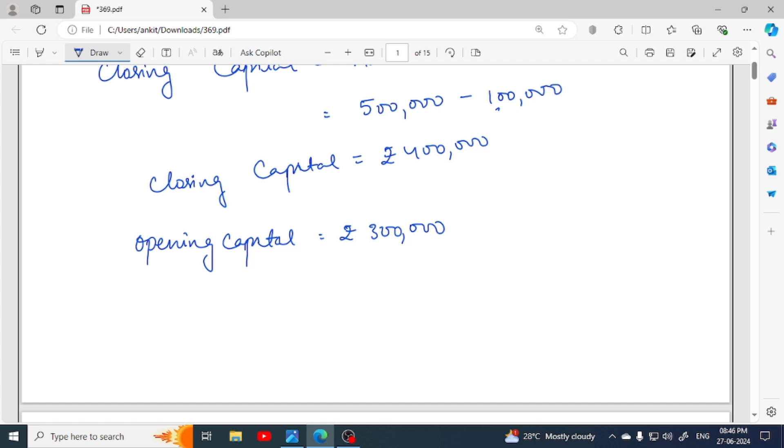Obviously, if there is profit, capital increases. If there is loss, obviously capital is reduced. So what do we do here? Closing capital minus opening capital. When you calculate profit, profit equals 4,00,000 rupees minus 3,00,000 rupees. So what will you get? That is 1,00,000 rupees. And this is the solution of question number 12.